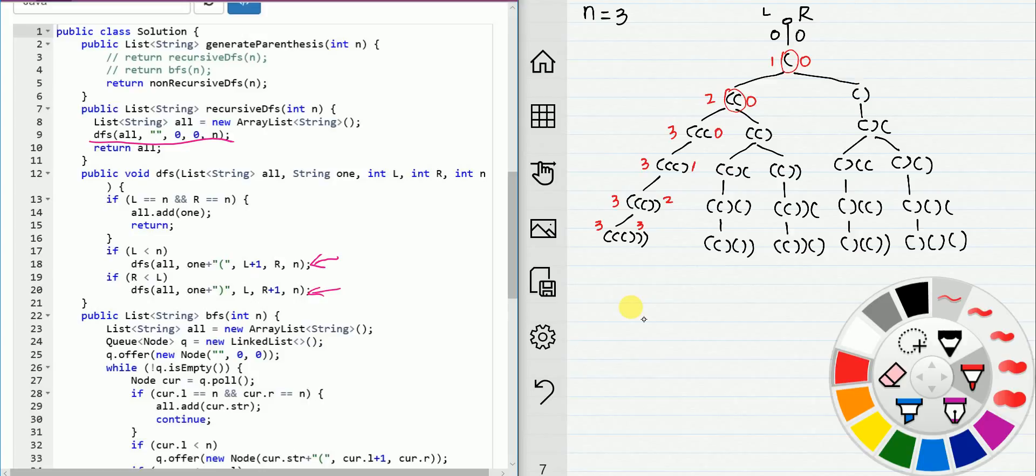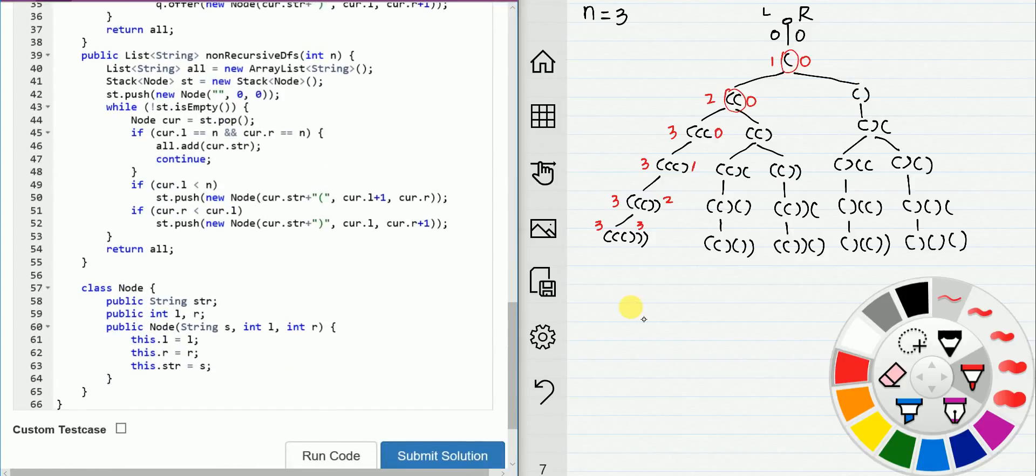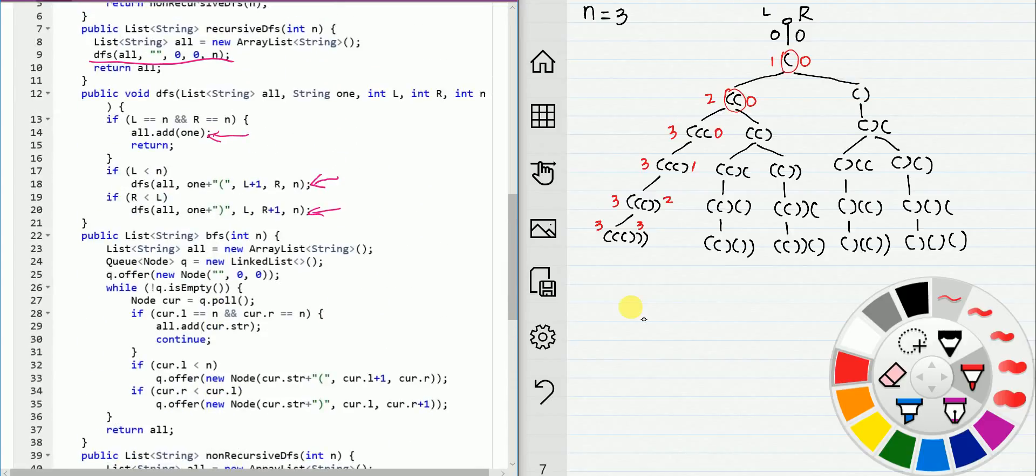Another example is BFS. BFS we need auxiliary structure to keep tracking each node here and here. At beginning we push empty string with zero zero into the queue. While queue is not empty, we have option one and option two, so we got two nodes inside the queue.